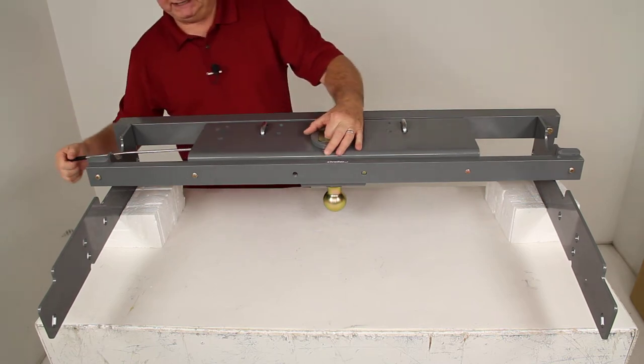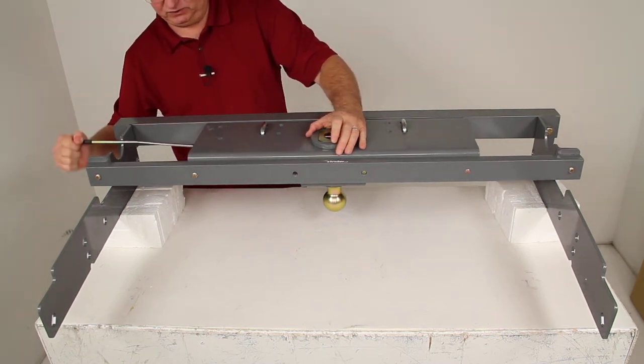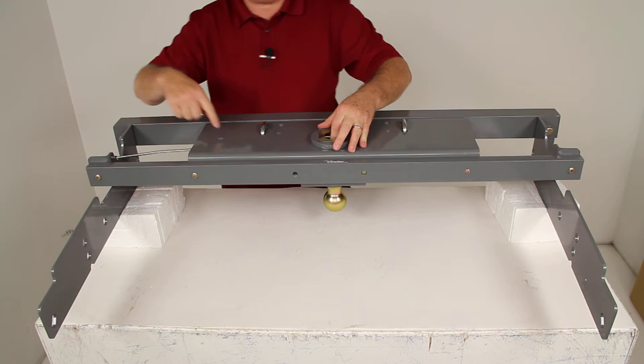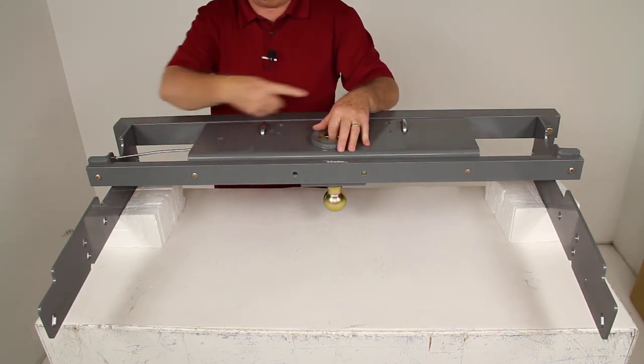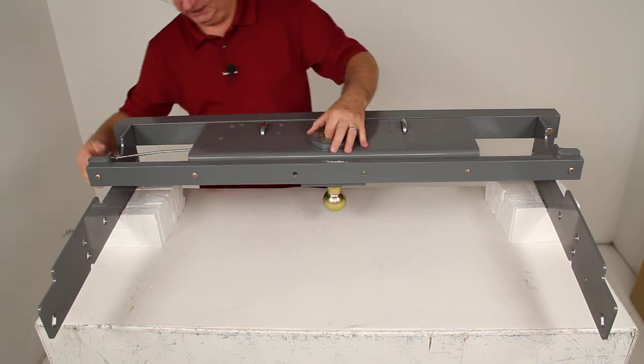And then to hold it into place, if you release this handle, if you twist it, it'll release a five-eighths inch thick spring-loaded steel locking pin which is on the end of this handle and it'll go all the way through the ball to secure it into place.